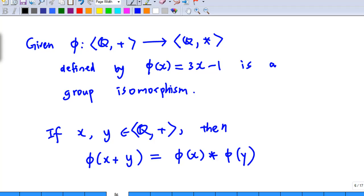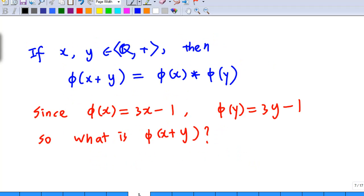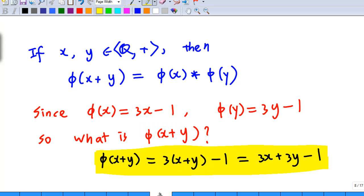So what is phi of x plus y, phi of x, and phi of y? Remember phi of x is 3x minus 1. Therefore phi of y is 3y minus 1. And what is phi of x plus y? Using the definition, we know that phi of x plus y is 3 times x plus y minus 1. And we simplify it to 3x plus 3y minus 1.